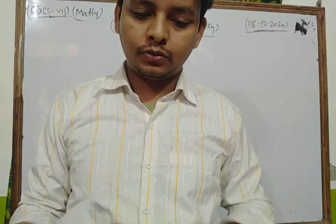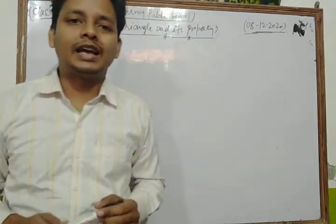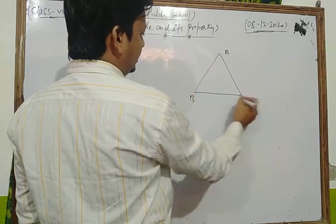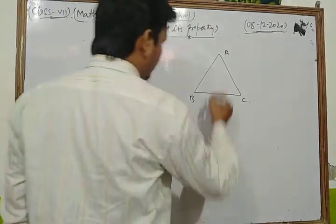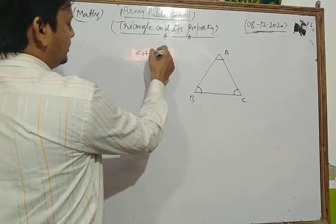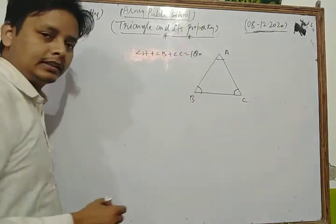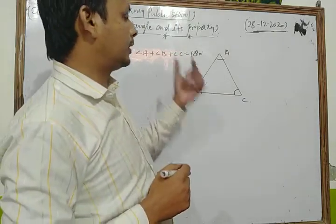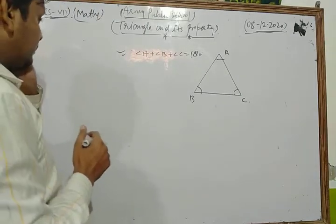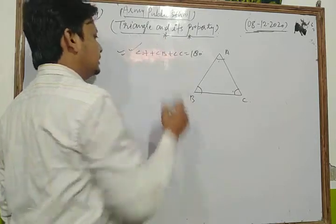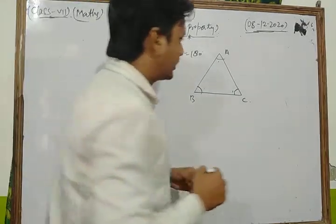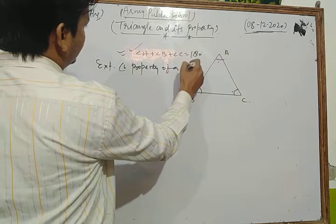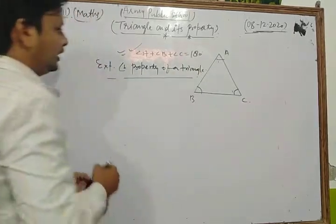First of all we discuss some important properties related to triangles. The first one is the angle sum property of a triangle. In any triangle ABC, the sum of all interior angles is 180 degrees — angle A plus angle B plus angle C is equal to 180 degrees. This is one of the most important properties of a triangle.